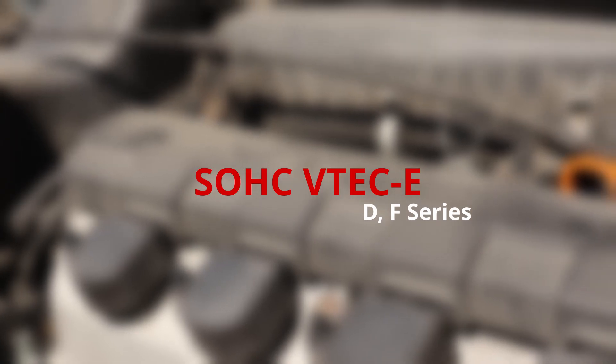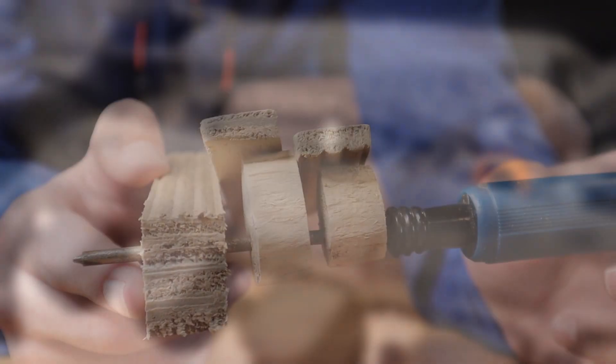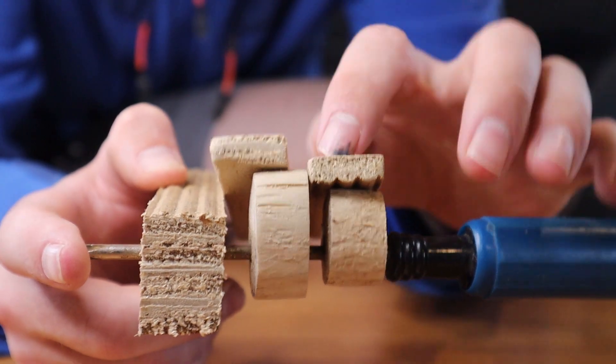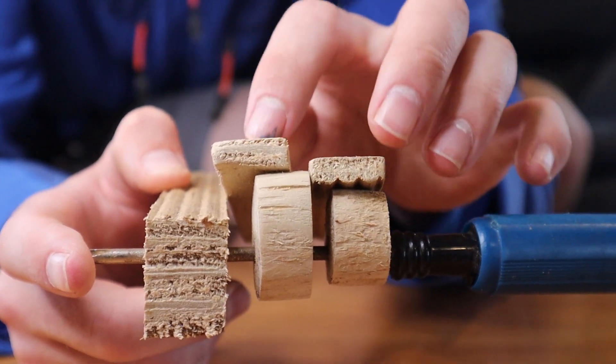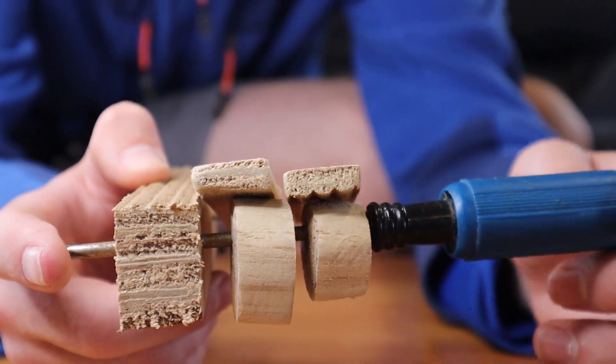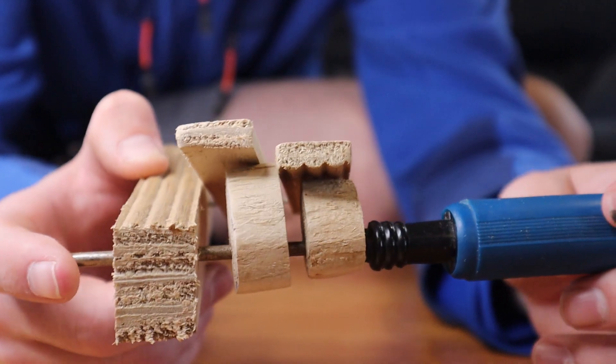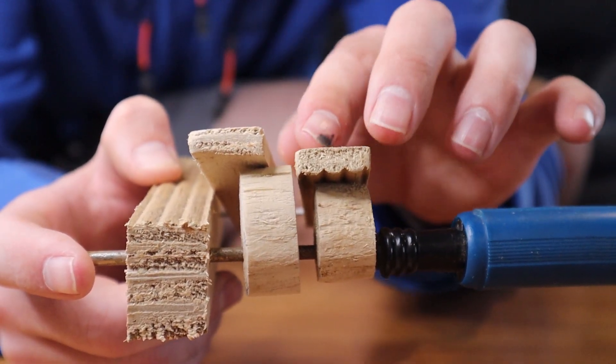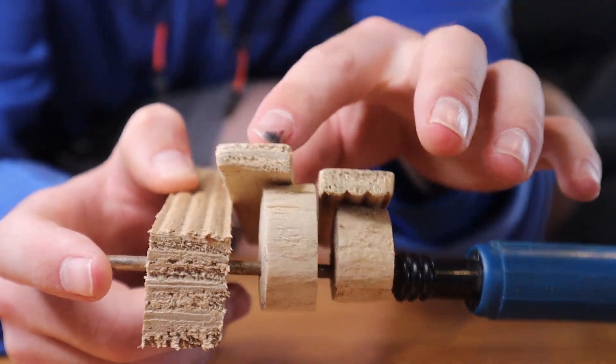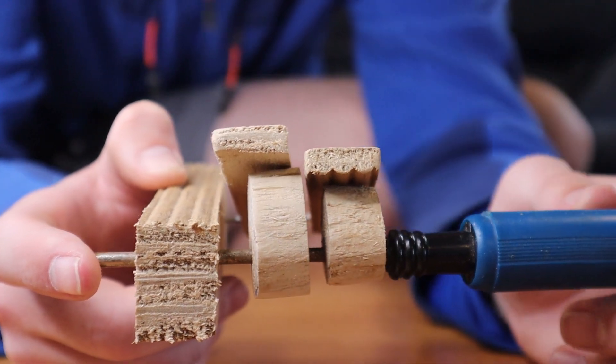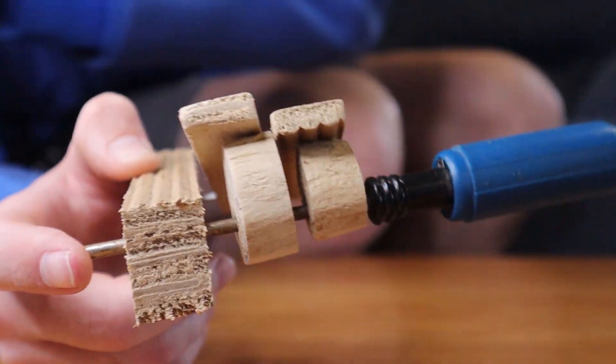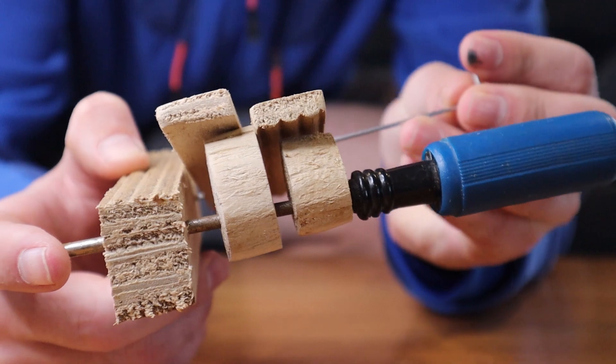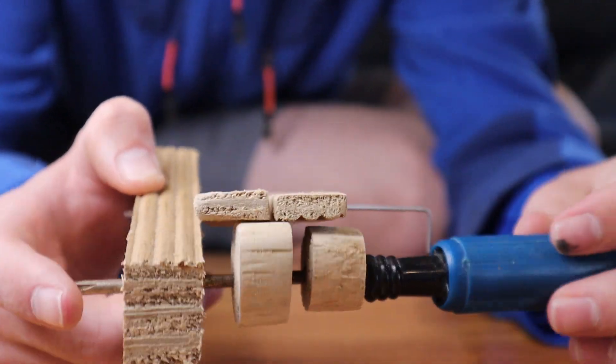SOHC VTEC-E works exactly the same as DOHC VTEC-E that I mentioned before, where you have one tiny little opening cam and one normal size cam. And to improve efficiency it has this one cam open just a tiny little bit to create that swirl effect in the combustion chamber. And then when you want to go boomtown again, then it locks them together, runs them both off the normal size cam, and off you go.